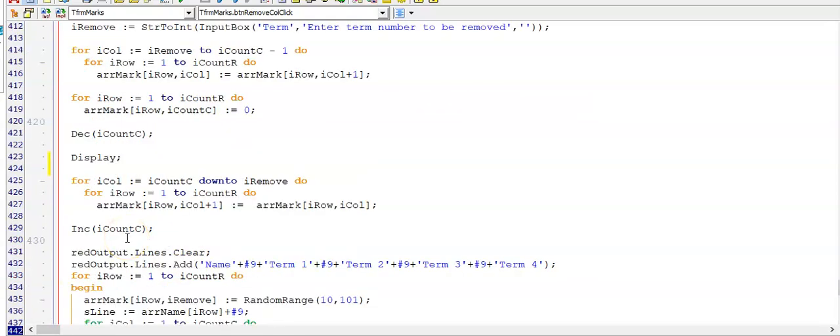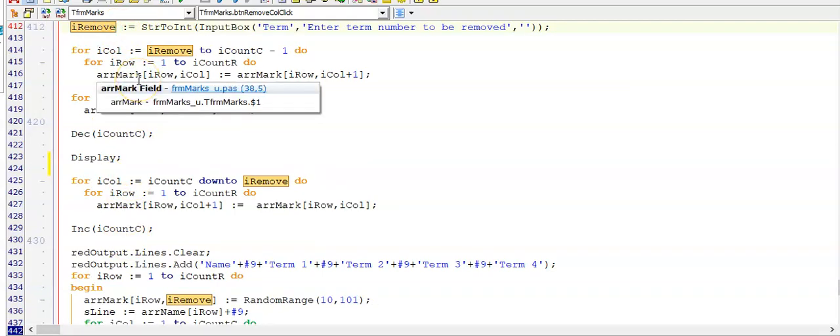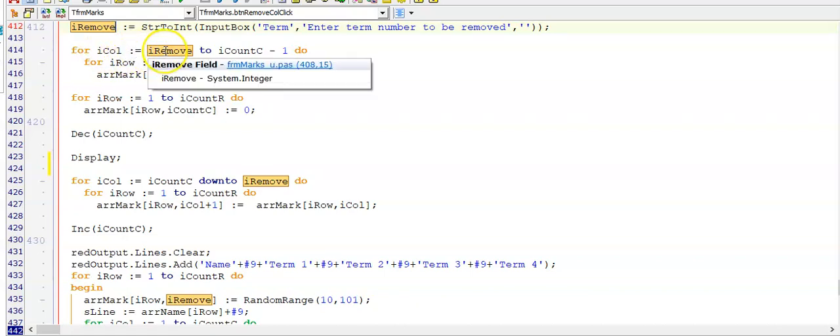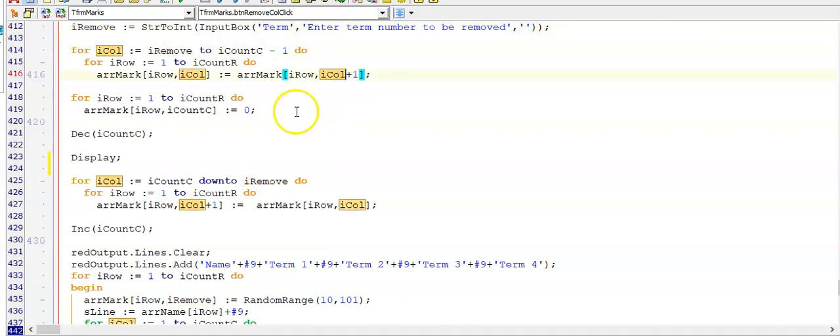Here is the memo to remove a term. The user can select which term they would like to remove. So I'm removing a column and therefore I'll start with a for loop for the column starting at the point where I want to remove it. Going up to iCountC minus 1. And replacing every mark with the next one in the next column.